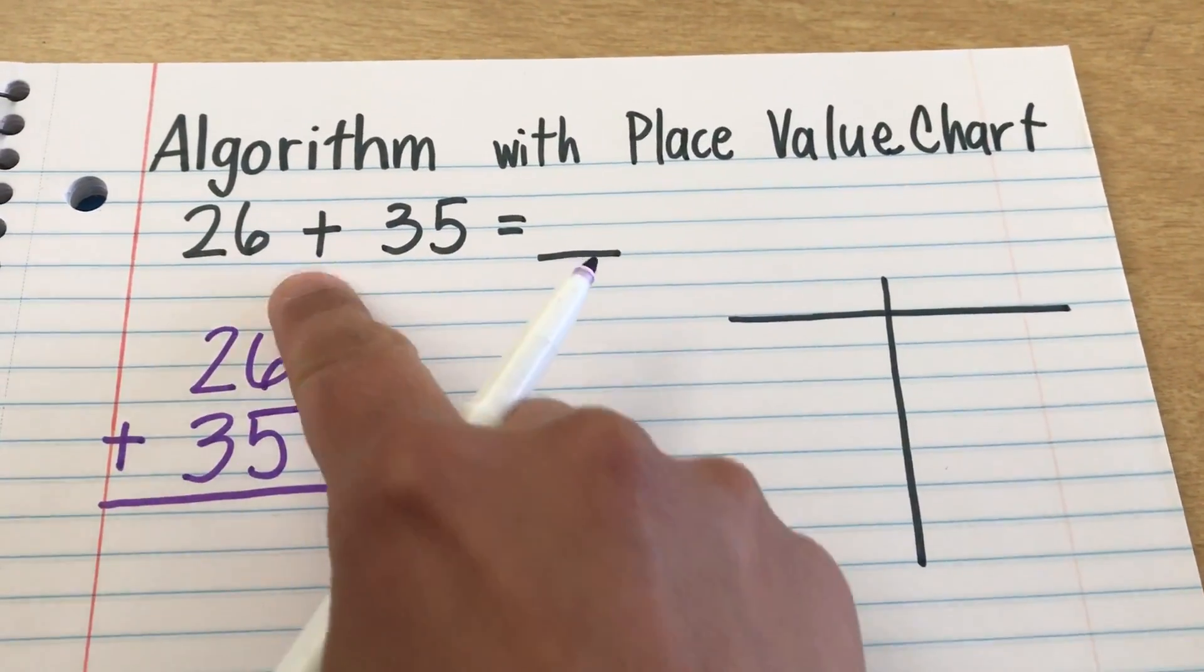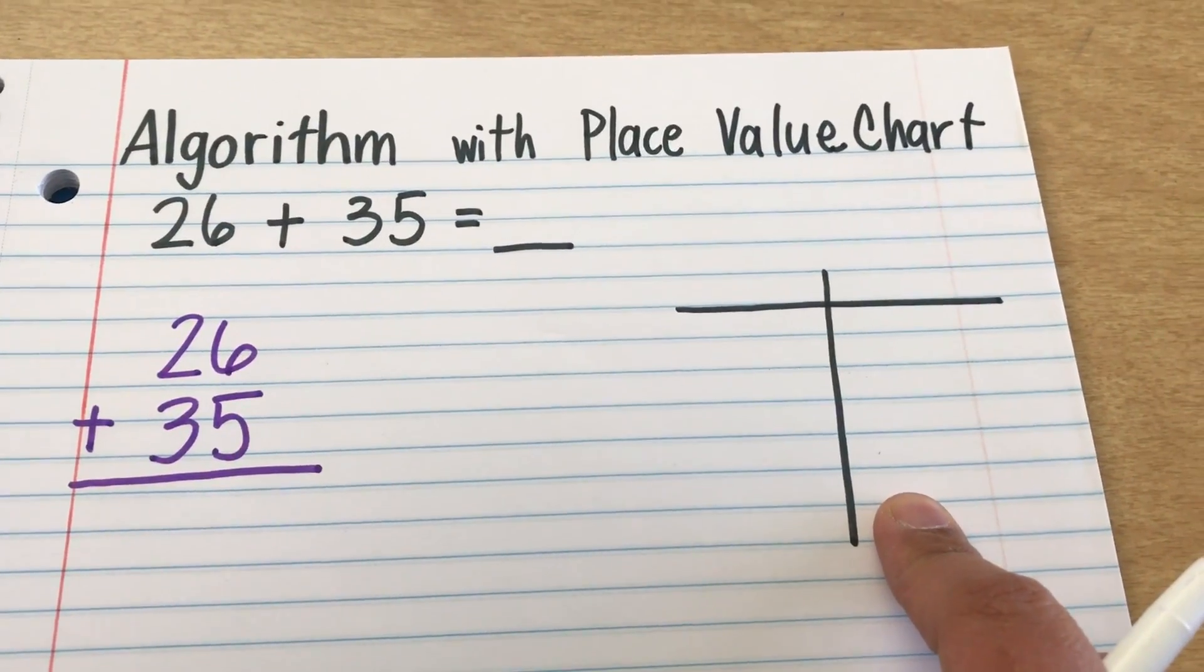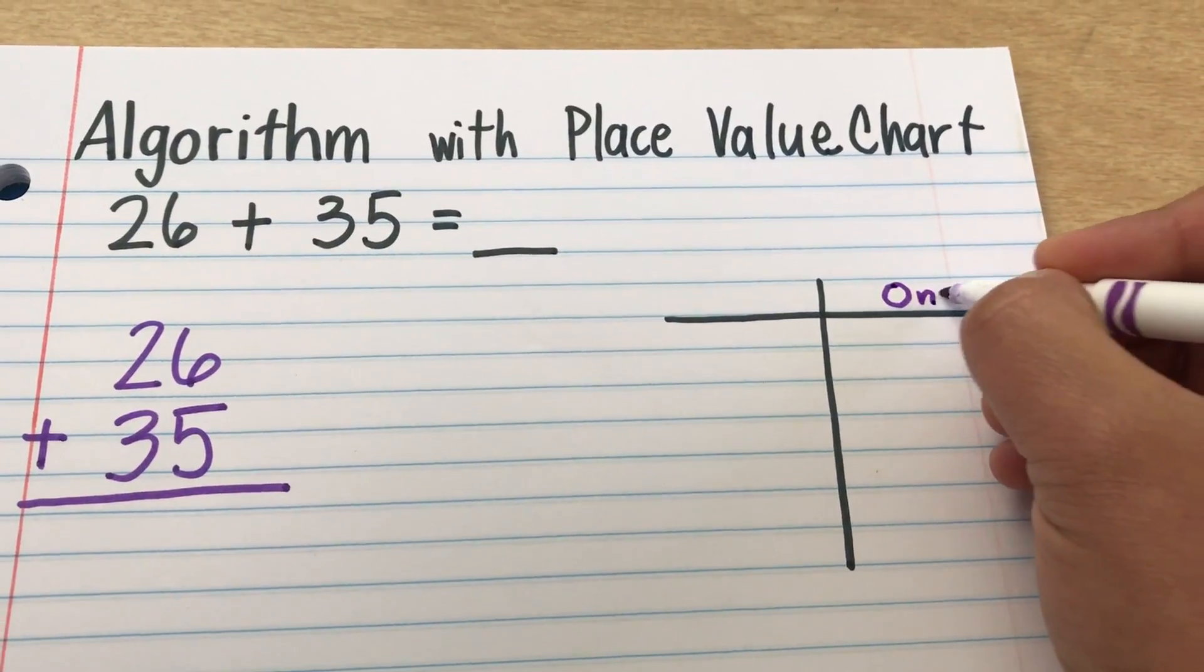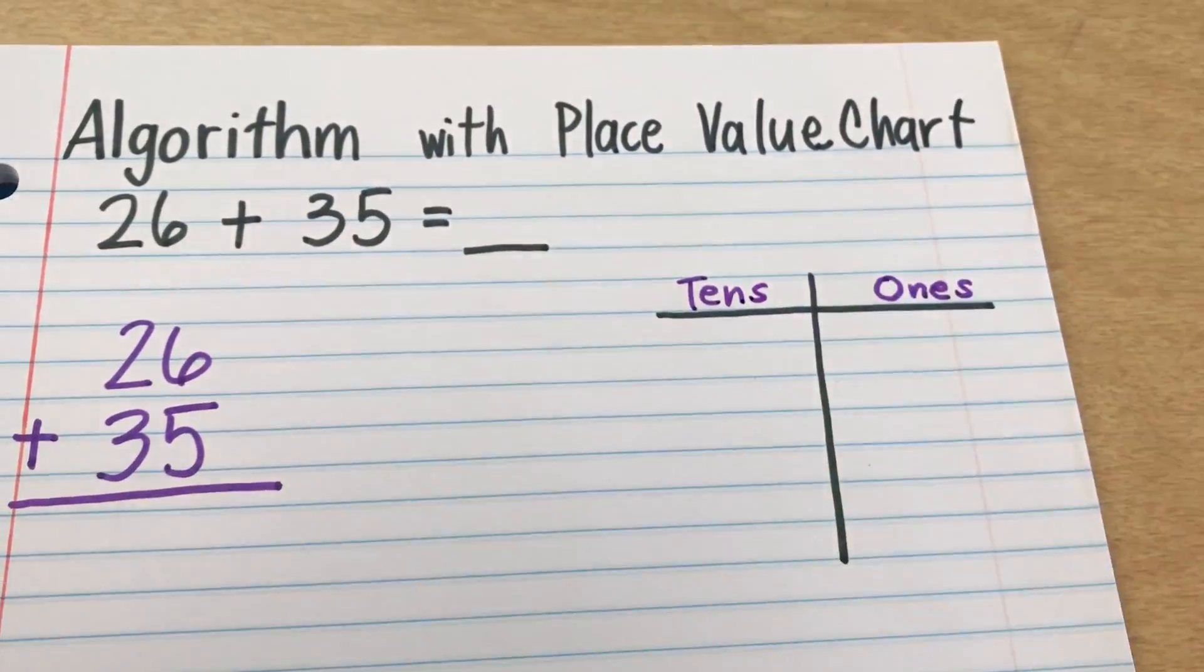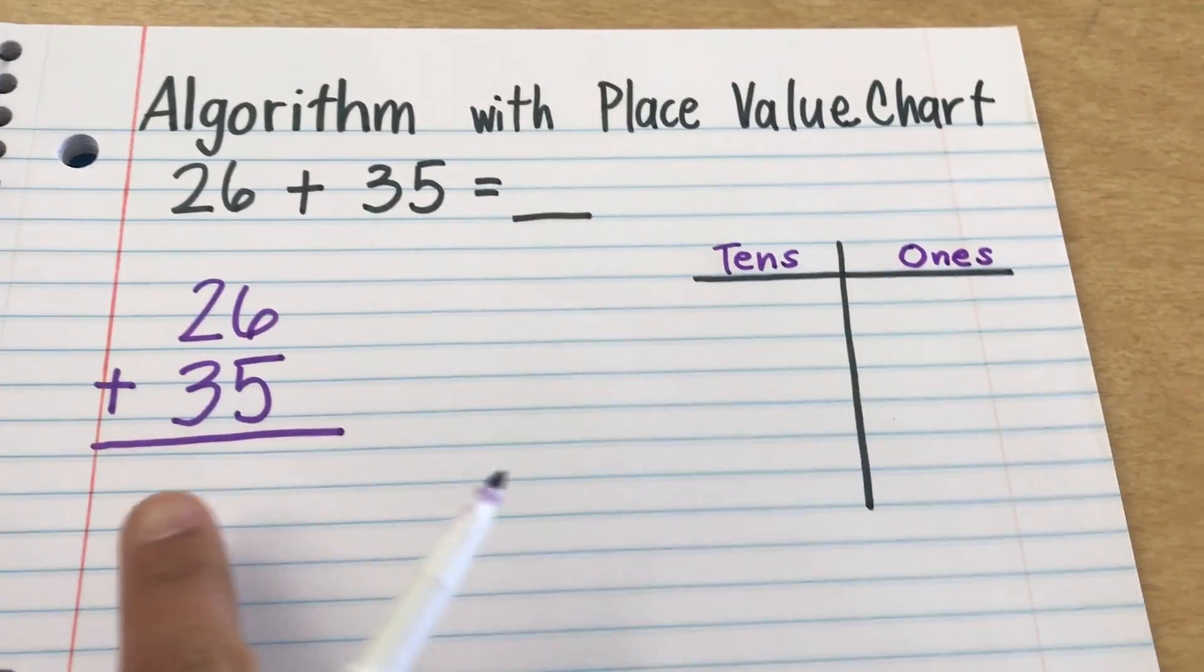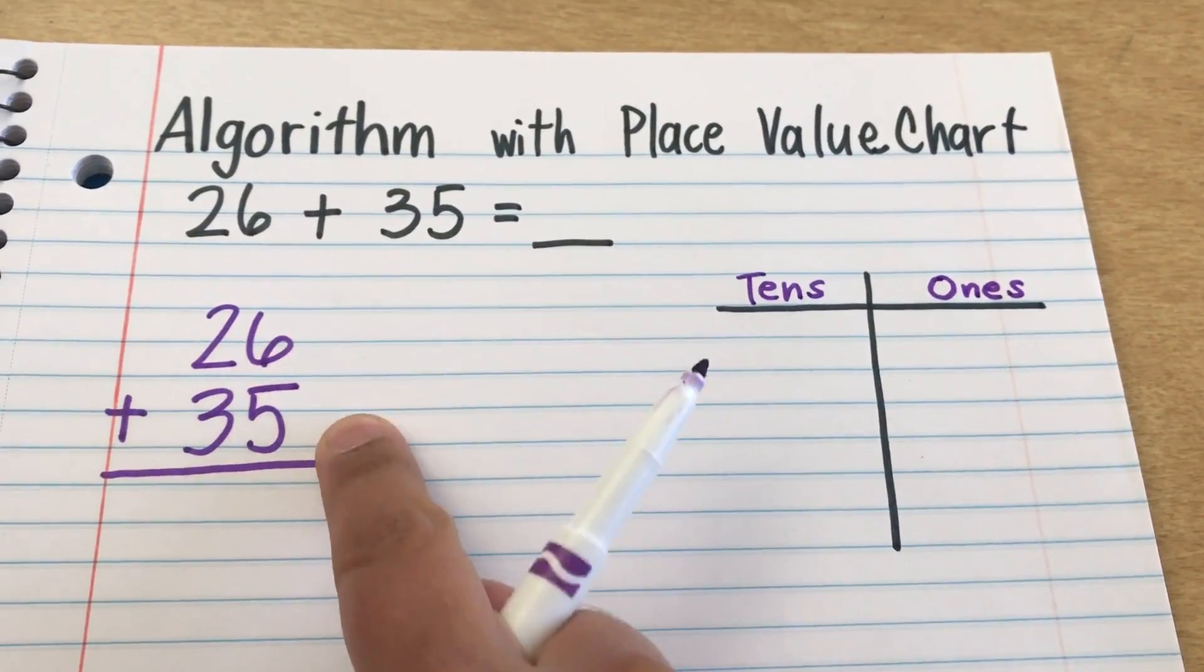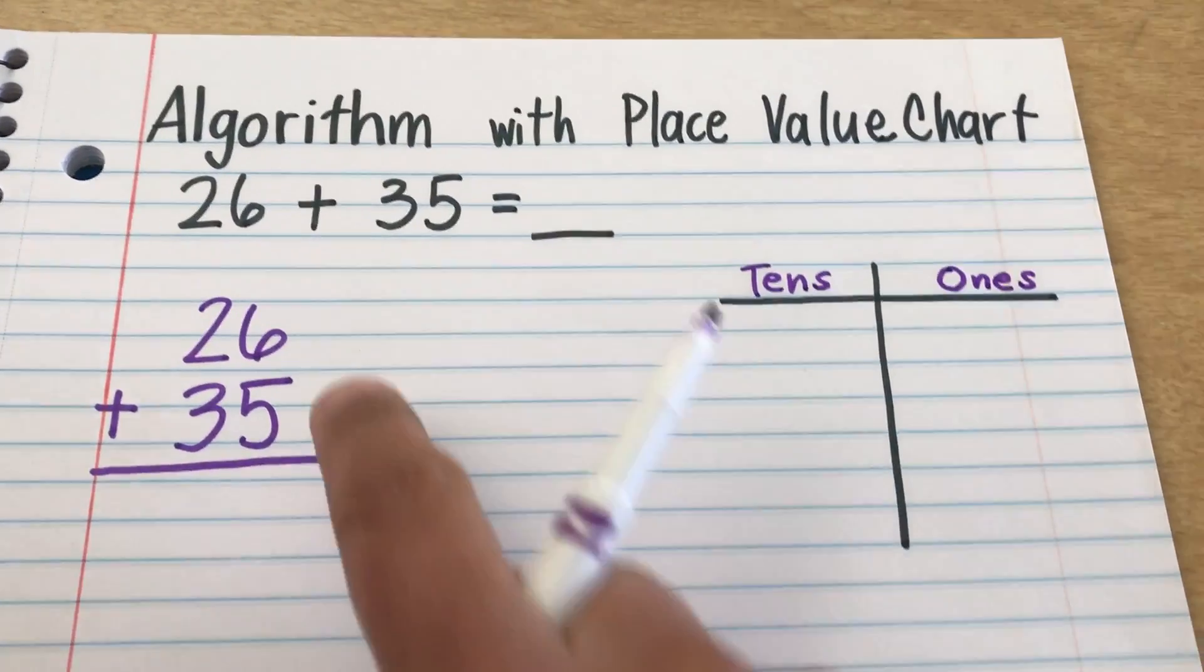Alright, so we have our equation vertically. This T chart over here, this is called our place value chart. We have our 1s and we have our 10s side for now. Okay, we're only dealing with 1s and 10s for now. So what I tell my students is that we're going to draw these numbers on our place value chart. Okay, so we have 26.